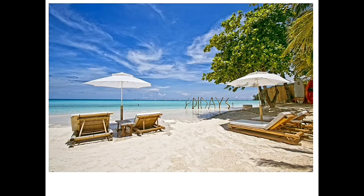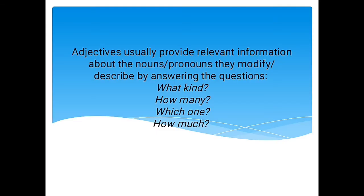What can you say about this picture? You can say beautiful, white sand, cool place. Those words that describe the place are adjectives. Adjectives usually provide relevant information about the nouns and pronouns they modify or describe by answering the question: what kind, how many, which one, and how much.